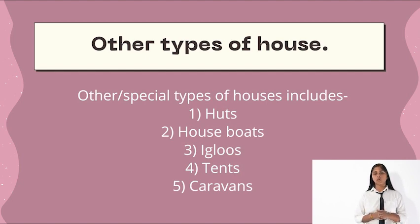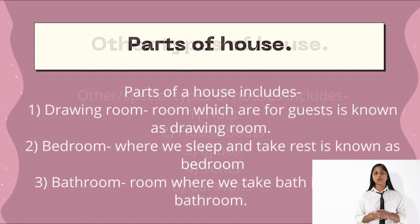There are some other types of houses too. First, we have huts. Second, houseboats. Third, igloos, which are made up of ice. Fourth, tents. Fifth, we have caravans.